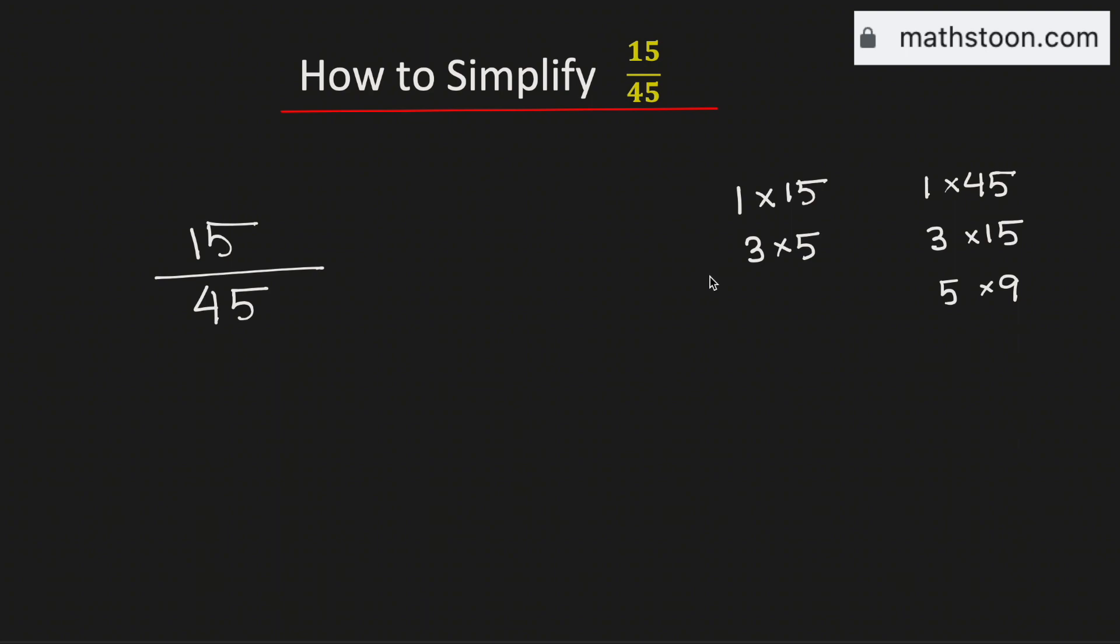See that among these numbers, 15 is the greatest one which is common in these two lists. Therefore we can say that 15 is the greatest common factor of 15 and 45.